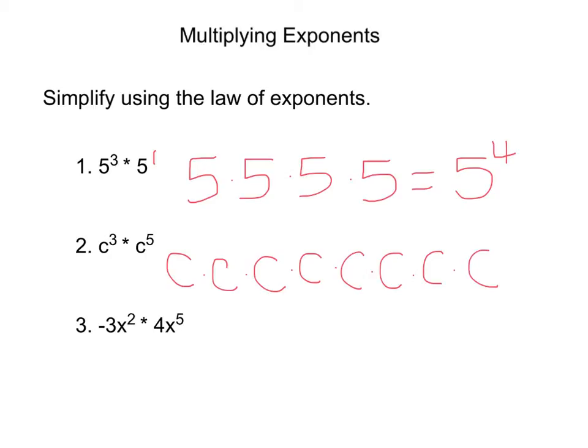After we've multiplied them all, we would just have to count how many that is. That's eight c's, so it would be c to the eighth power.